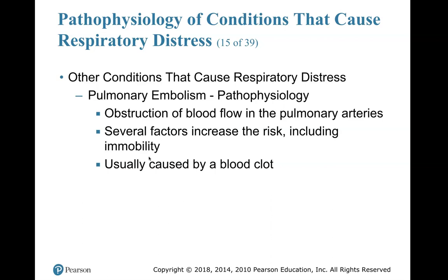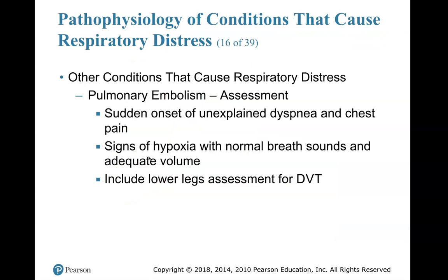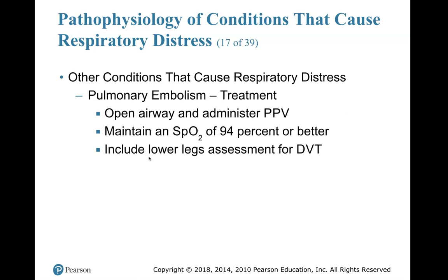Pulmonary embolism. Pathophysiology: obstruction of blood flow in the pulmonary arteries. Several factors increase the risk, including immobility. Usually caused by a blood clot — this is in the blood vessels, not the airway. Assessment: sudden onset of unexplained dyspnea and chest pain, signs of hypoxia with normal breathing sounds and adequate volume. Include lower leg assessment for DVT — DVT is where you see swelling, you squeeze the leg, and when you release, your finger impression is still there. Treatment: open the airway and administer positive pressure ventilation, maintain SpO2 of 94% or better, include lower leg assessment for DVT.